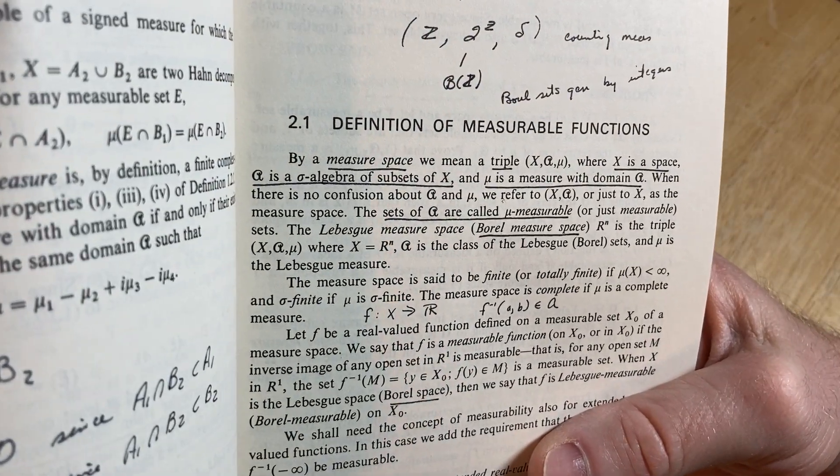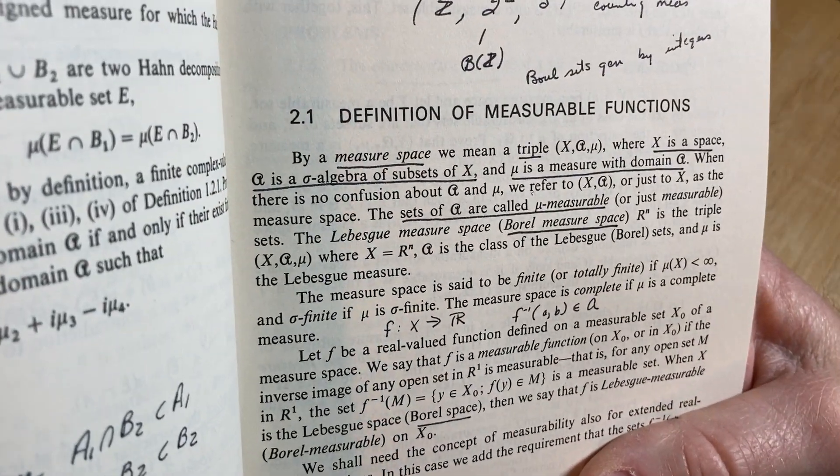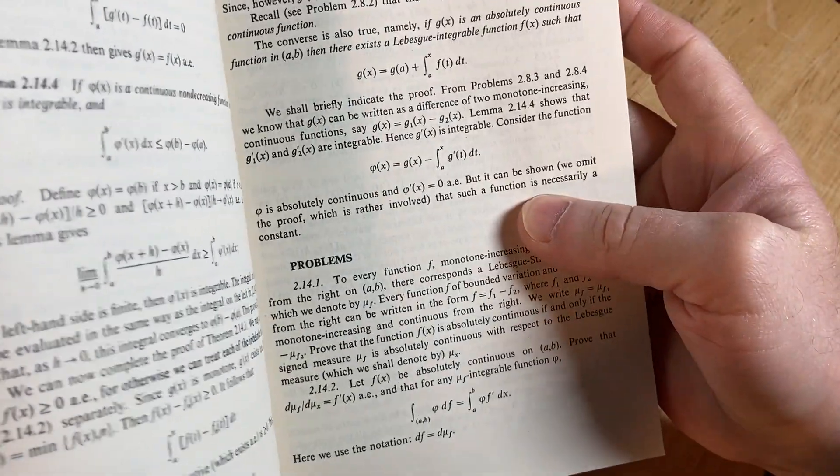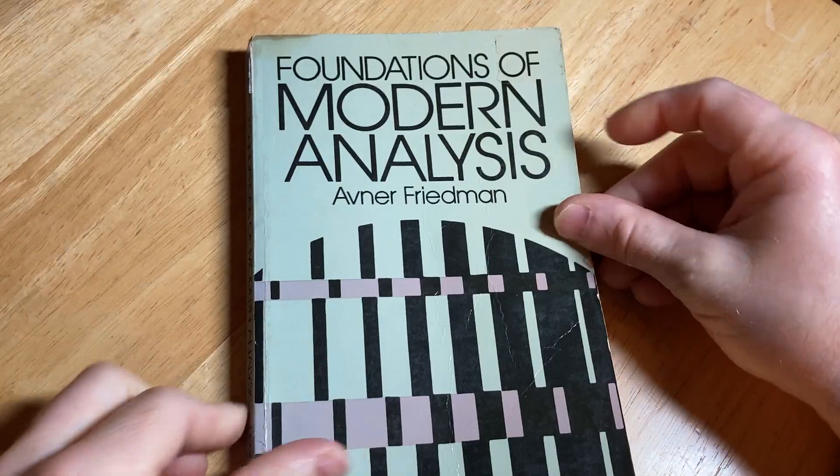Definition of measurable functions. You know, by a measure space, we mean a triple. And then here it gives you all the definitions. Yeah, it's pretty intense. Pretty intense stuff. It's good stuff though. It's mathematics. Keep doing math.